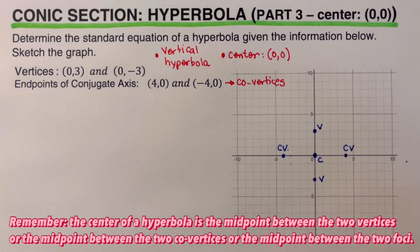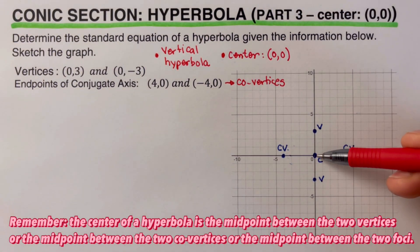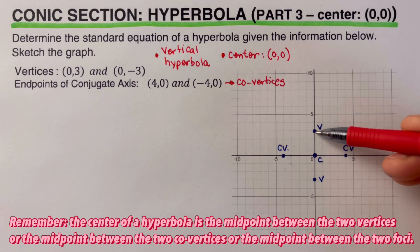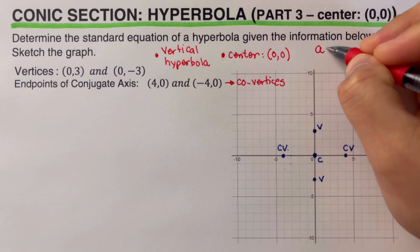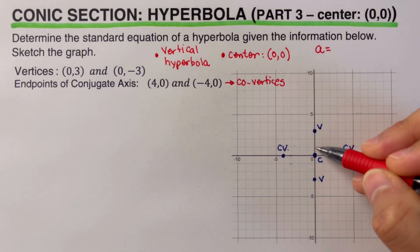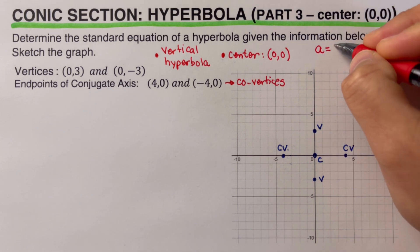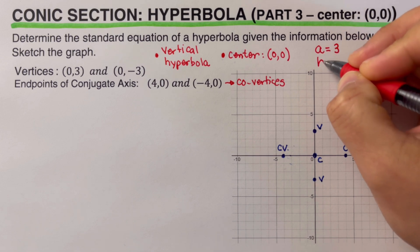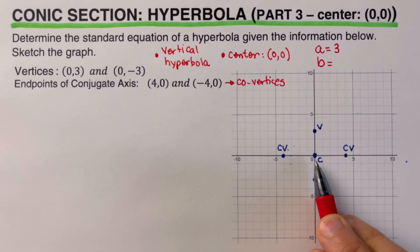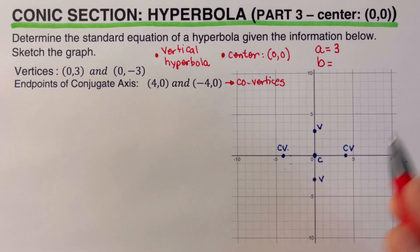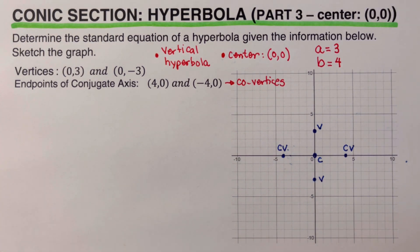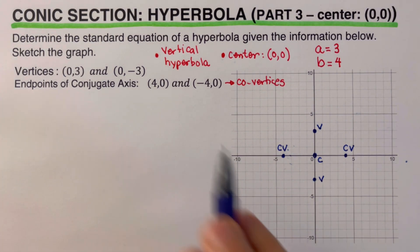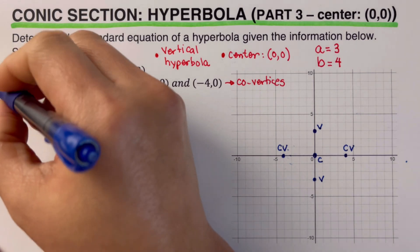The distance from the center to the vertex is represented as A. Counting from the center to vertex (0, 3), A = 3. The distance from the center to the co-vertex is represented as B. Counting from the center to co-vertex (4, 0), B = 4.